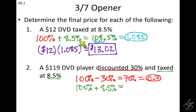So 100% plus 8.5% gives us 108.5%. We change that to a decimal. Get 1.085. That is not right. 1.085.